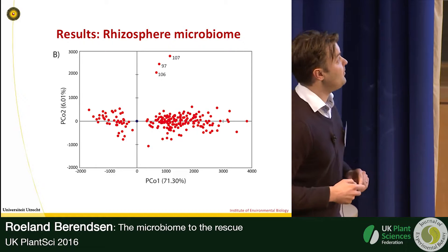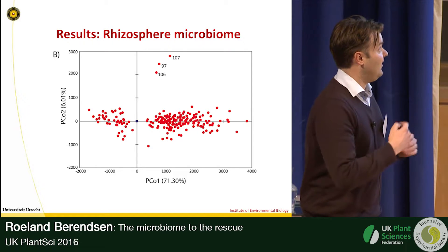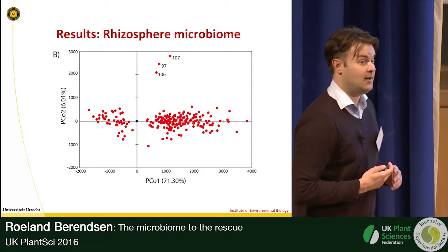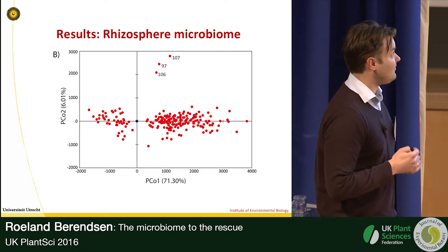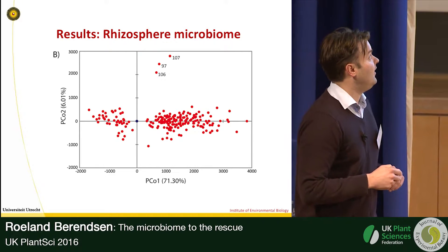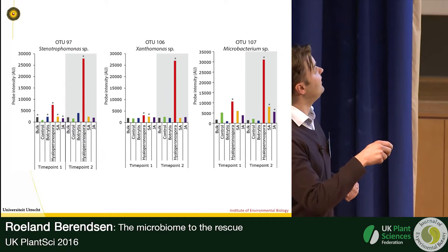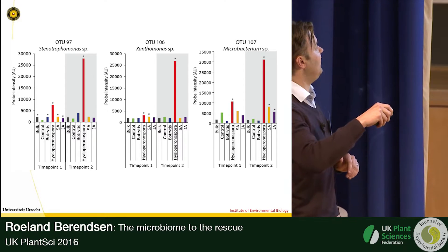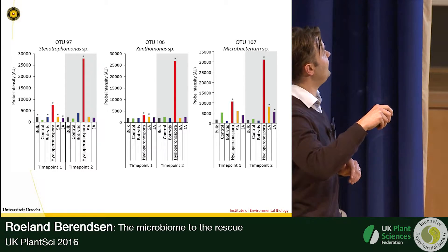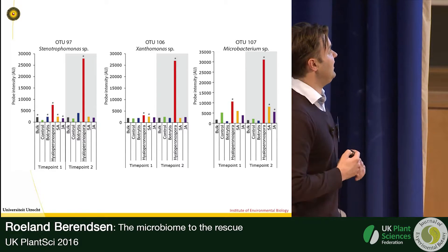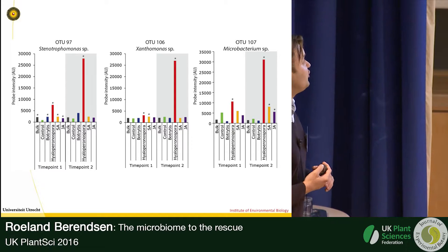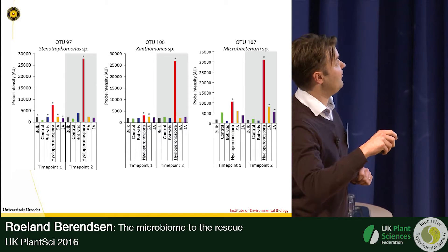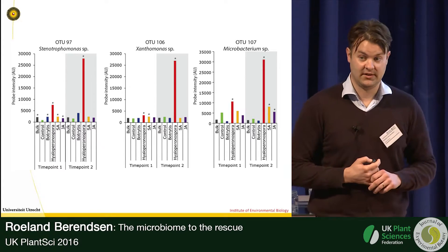On the left there's a smaller group of bulk soil-related OTUs that are more abundant in bulk soil and decrease in rhizospheres. There are three OTUs at the top that really differ on the second principal component, separating the Hyaloperonospora-infected plants from the rest. These OTUs correspond to a Stenotrophomonas and a Microbacterium, and already in the first time point they increase significantly in abundance compared to control-treated plants.